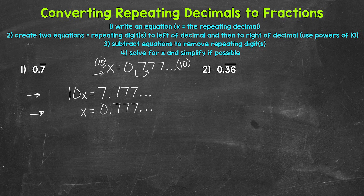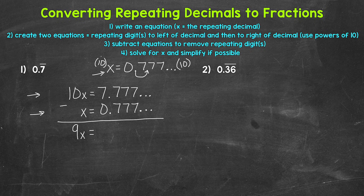Now we can move on to step 3, where we subtract these equations to remove the repeating digit. So let's subtract: 10x minus x gives us 9x equals — and then on the right side, the repeating 7s cancel out, they equal 0. So now we just have 7 minus 0, which is 7. The whole point here was to get rid of the repeating digit 7, and now we have an equation to give us our fraction.